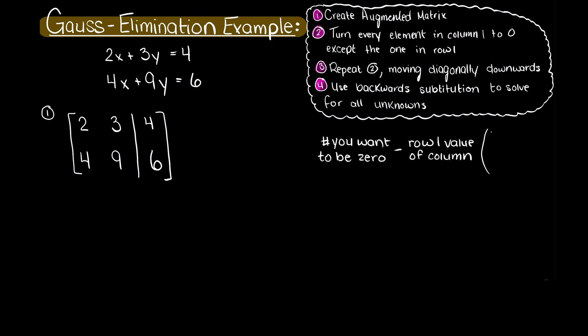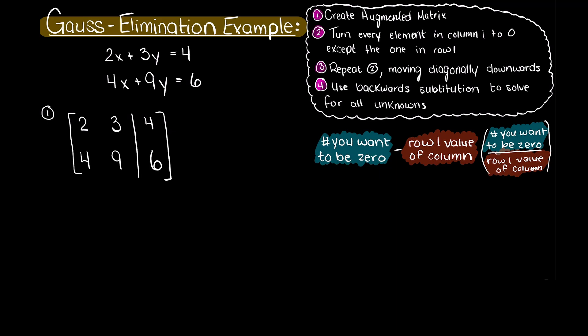So, we need to turn this 4 here into a 0. To accomplish this we need to perform some row operations. The easiest way to do this is using the following scaling factor equation. Let's say that we want to make this element 0.